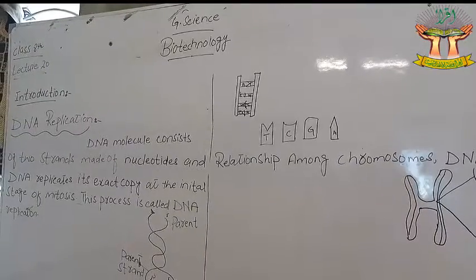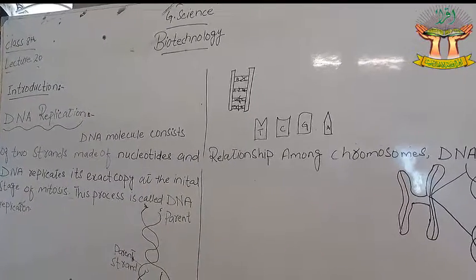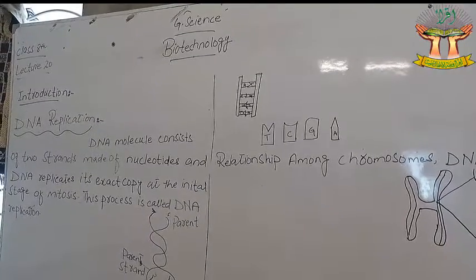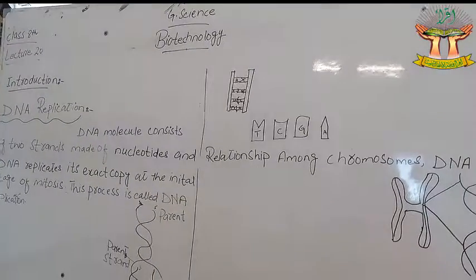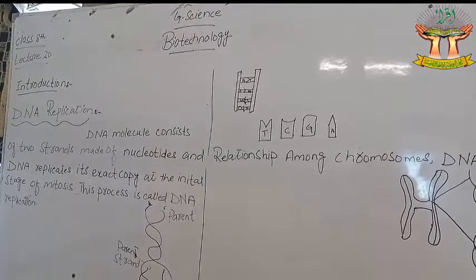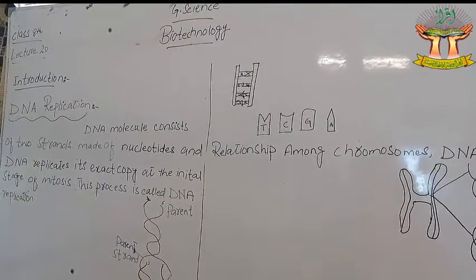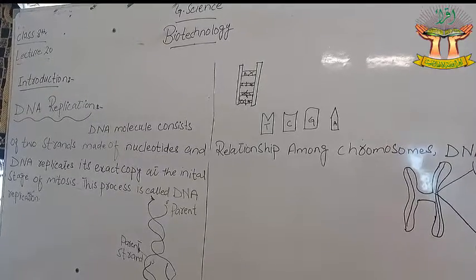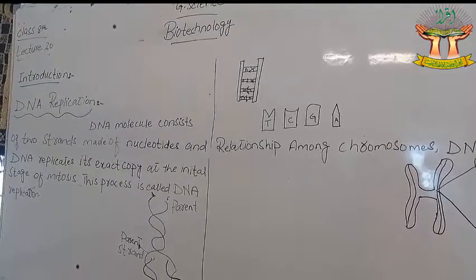We have studied in previous classes how to make products using yeast and bacteria — for example, how to make cheese. The scientific method by which we produce these products using living organisms is called fermentation.